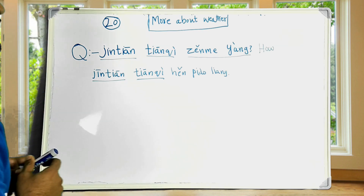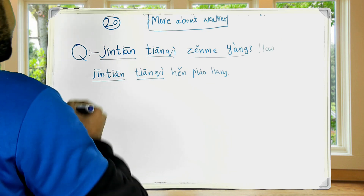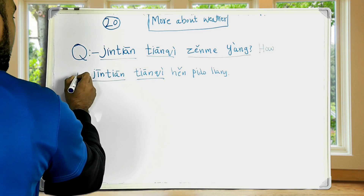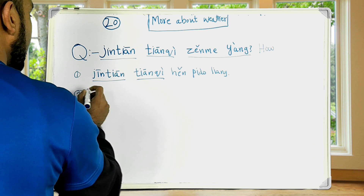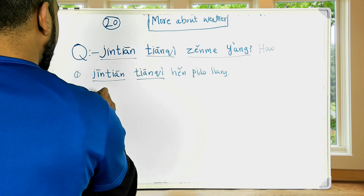Today the weather is very beautiful — 今天天气很漂亮. Number two is: it's windy today.